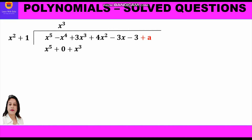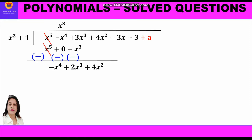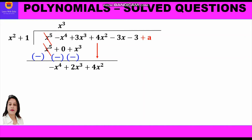Step 3 — subtraction: change the signs (plus becomes minus). x⁵ and -x⁵ cancel; -x⁴ - 0 gives -x⁴; 3x³ - x³ gives +2x³. We bring down 4x² from the dividend. Now we apply the three steps again.